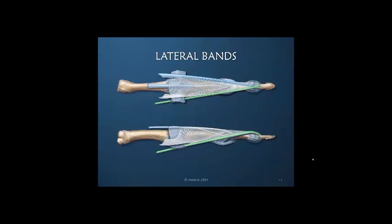The lateral bands are described as nothing more than a thickened edge of the dorsal apparatus — not distinct, independently moving tendons at all. The radial aspect is colored green and the ulnar aspect blue, representing the left ring finger illustrated here. The blue represents the interosseous influence, while the green is the lumbrical influence. Interestingly, the lateral bands have a very strong lumbrical muscle influence radially but only interosseous influence ulnarly.